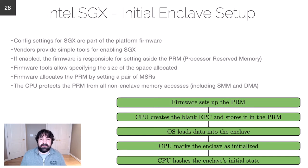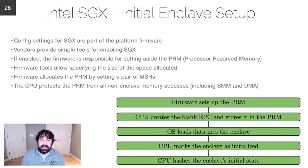Looking at the initial enclave setup, the firmware — much like in TrustZone — sets up the area where the enclave will reside, called the processor reserved memory, or PRM. The CPU then creates blank enclave page caches and stores them inside the PRM, loads data into the enclave, and marks it as initialized once data is loaded correctly. Finally, it creates a cryptographic hash of the enclave's initial state and subsequent states that will be used during the attestation process.